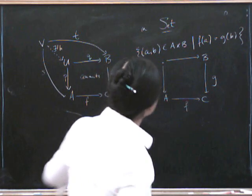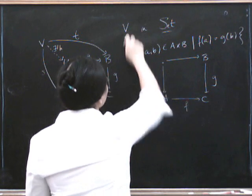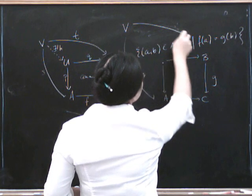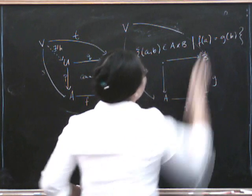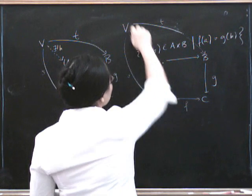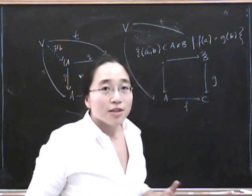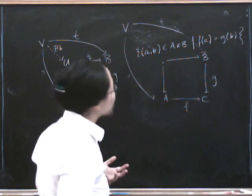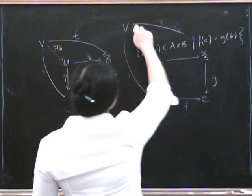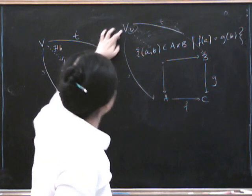Now, for the universal property, what we've got to do is we've got to take another set, V, equipped with... I'm crashing, didn't we? Equipped with functions S and T, making the outside commute, we've got to make some morphism going down here. Now, to construct this morphism, it's very similar to what we did with products, she said, desperately hoping that it is, very similar to what we did with products. So you've got to say, okay, let's have a little look at a little v in this set here.